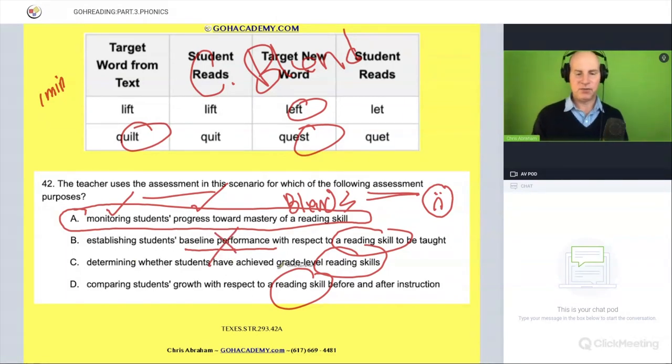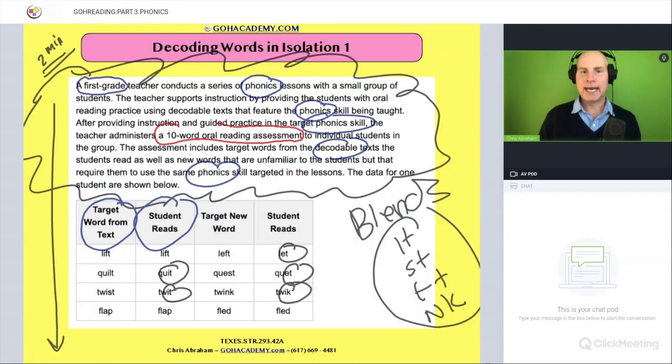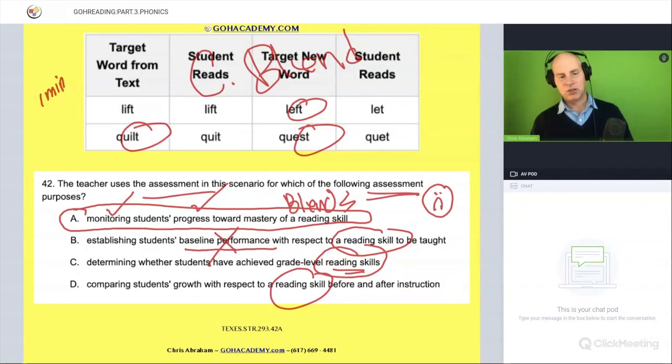Determining whether the student has achieved grade level reading skills - an assessment like that is multifaceted. What we're looking at here might be one component of a grade level reading test. There's probably a vocabulary portion, comprehension portion. Reading words in isolation would just be one small portion of that overall assessment. So that's not the purpose.